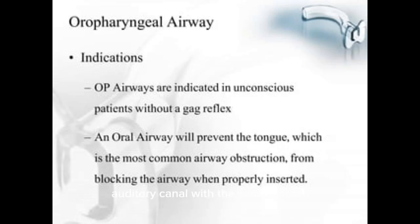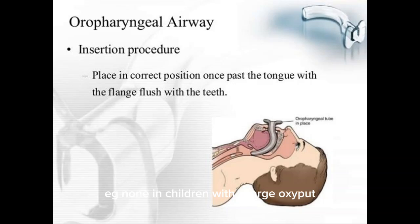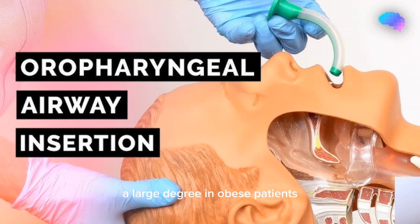Relevant anatomy for oropharyngeal airway: aligning the external auditory canal with the sternal notch may help open the upper airway and establishes the best position to view the airway if endotracheal intubation becomes necessary. The degree of head elevation that best aligns the ear and the sternal notch varies — for example, none in children with a large occiput, or a large degree in obese patients.